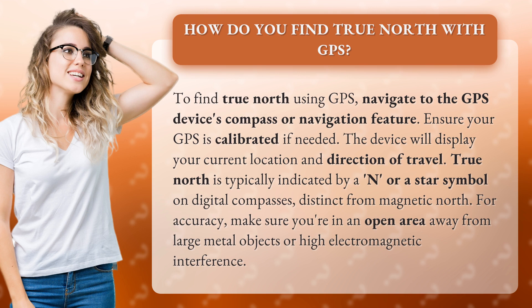True North is typically indicated by a N or a star symbol on digital compasses, distinct from Magnetic North. For accuracy, make sure you're in an open area, away from large metal objects or high electromagnetic interference.